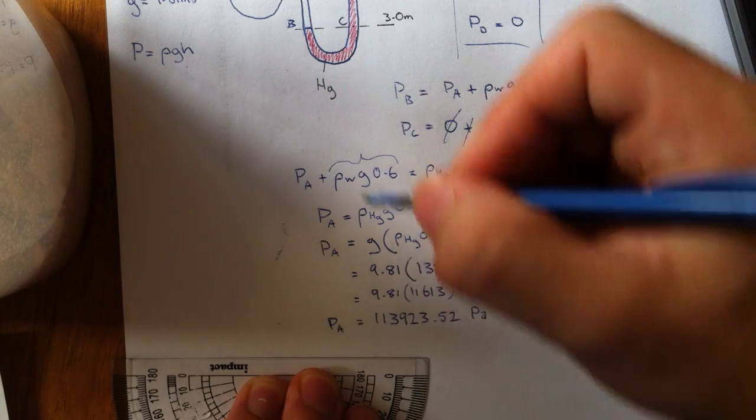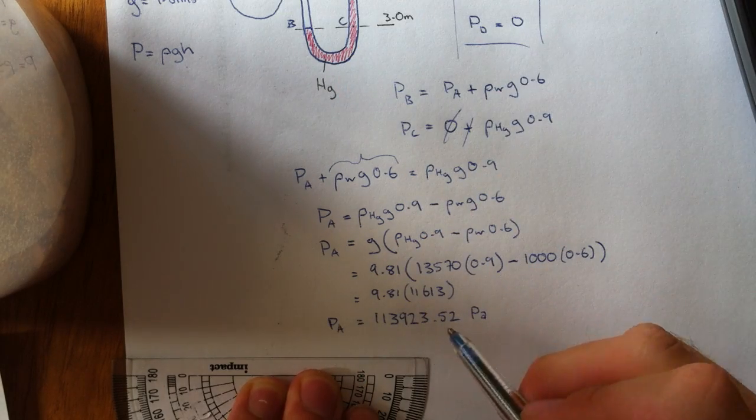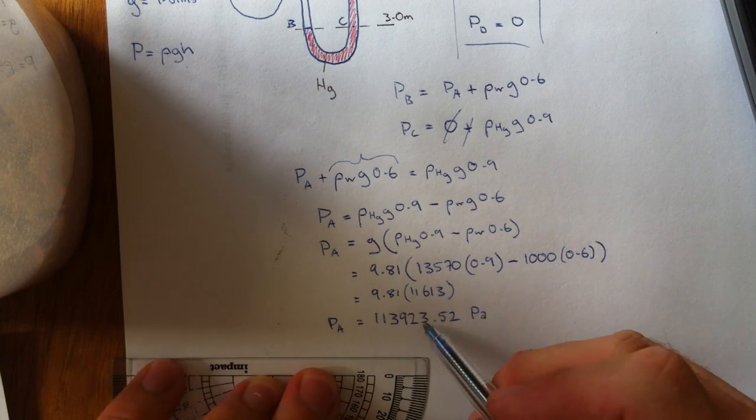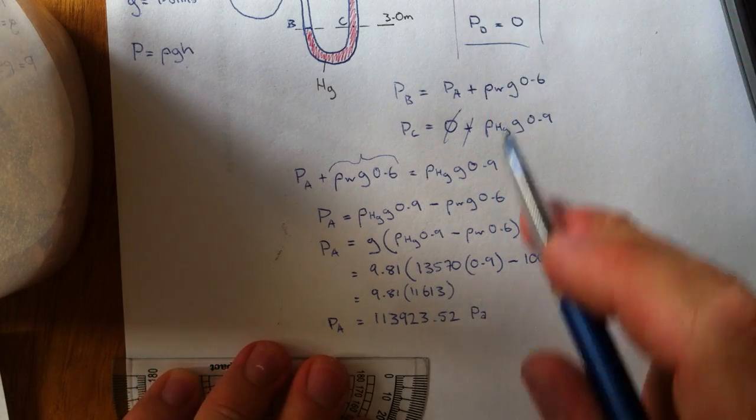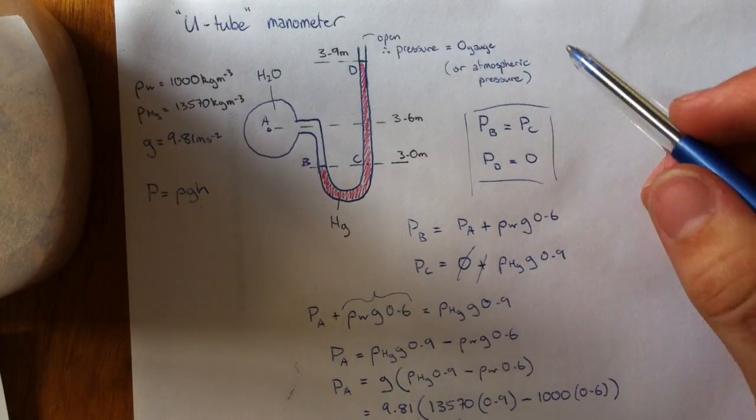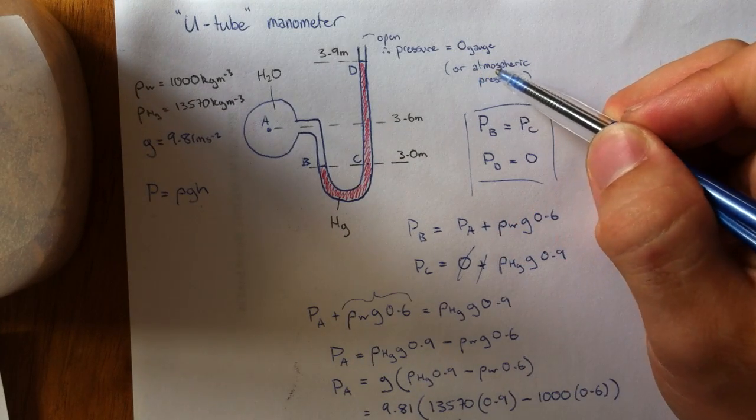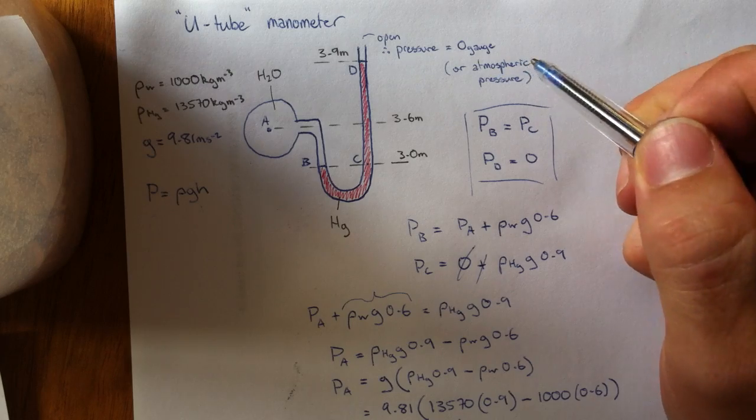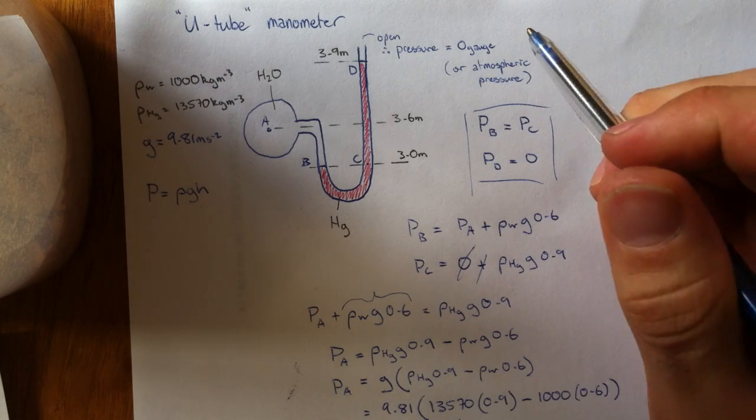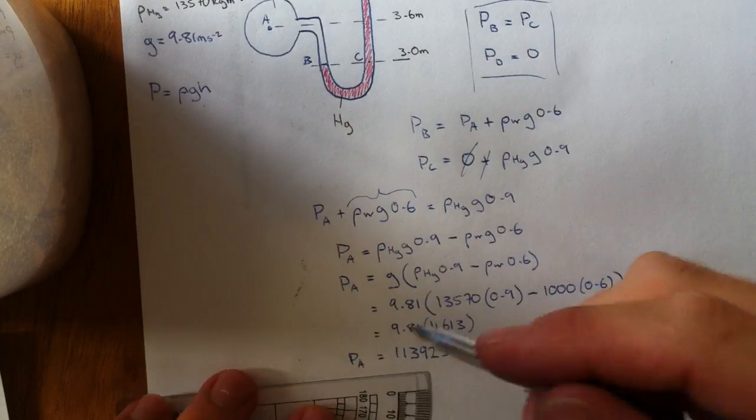That's the pressure at A. That's a gauge pressure, it's not absolute pressure. Absolute pressure is gauge pressure plus atmospheric pressure. We're simply using atmospheric pressure as a datum. So we've basically defined atmospheric pressure as 0.